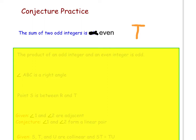This conjecture is true. No matter what odd integers you try, when you add two odd integers, the answer is indeed even.